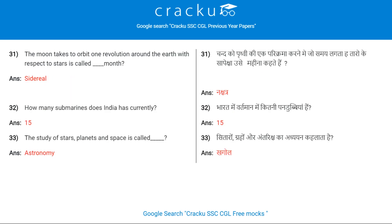The time the moon takes to orbit one revolution around the earth with respect to the stars is called a sidereal month. How many submarines does India currently have?